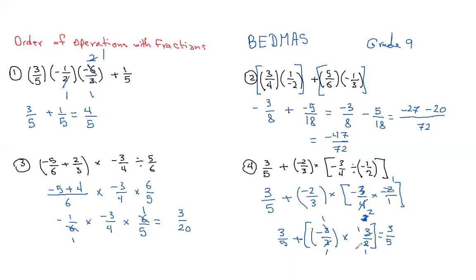There's just 1 times 1, 1 times 1, so it's just going to be 3/5 plus negative 1.